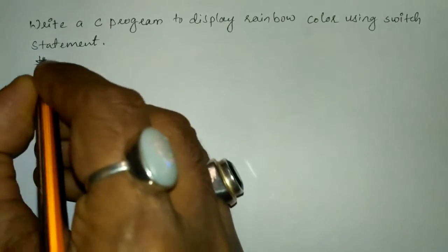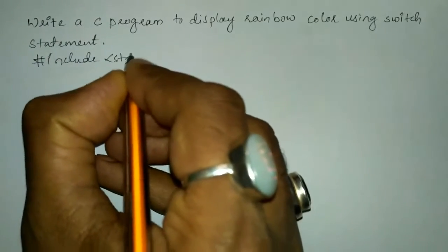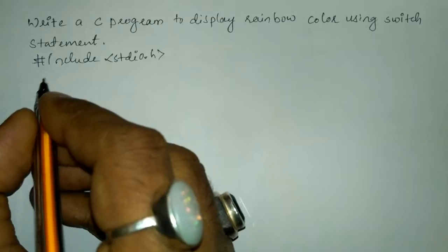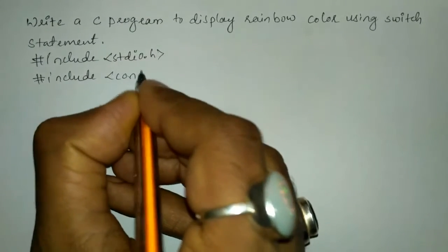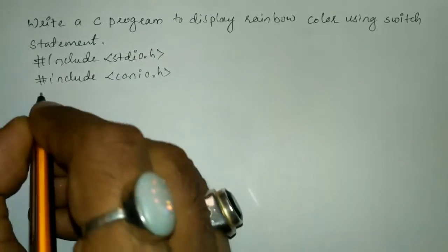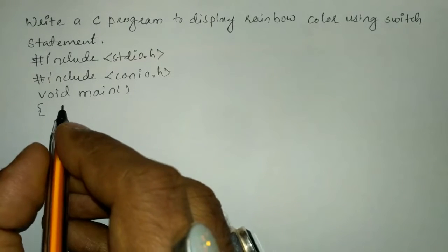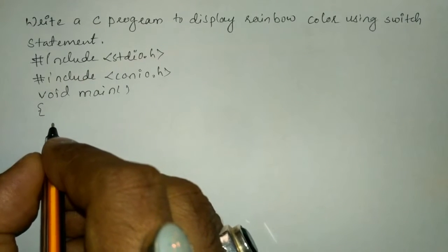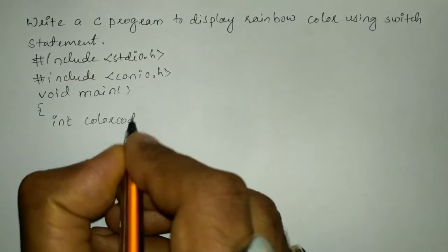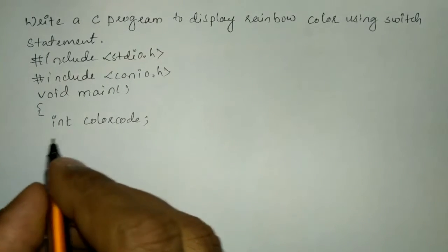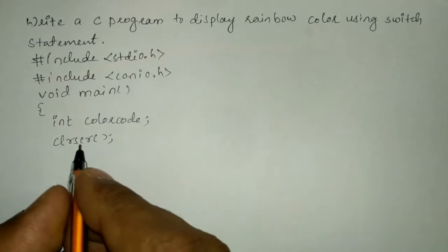Let us write the preprocessor directives: hash include in angular braces stdio.h, hash include conio.h, then the main function with a curly open brace. Here I'm going to declare a variable color code of type integer, put a semicolon, and then write clrscr, which is a function that clears the screen.